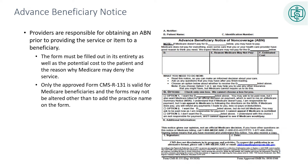A Medicare ABN, or Advanced Beneficiary Notice, is a notice that healthcare providers give to Medicare beneficiaries before providing certain medical services or items. The ABN informs the patient that Medicare may not cover the services or item, and that the patient will be responsible for payment if Medicare does not pay. The purpose of an ABN is to inform the patient of the potential financial liability before they receive the services or items, so they can make an informed decision about whether to proceed. It also allows the patient to explore alternative options for coverage or payment.